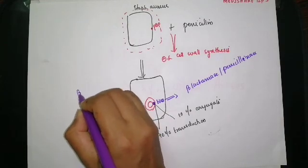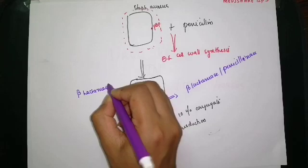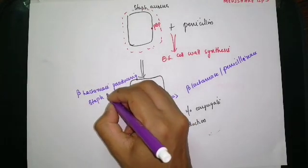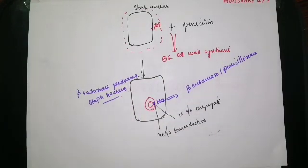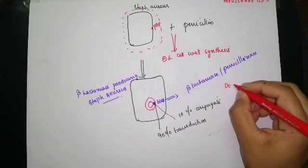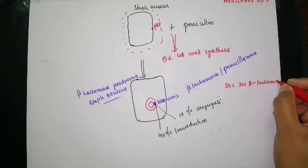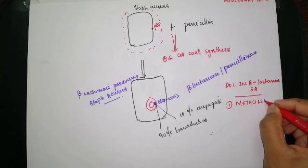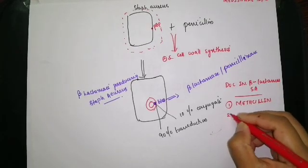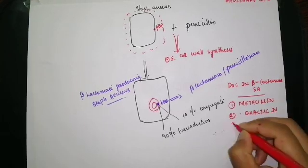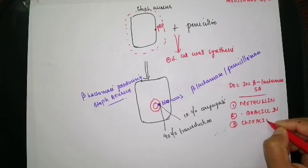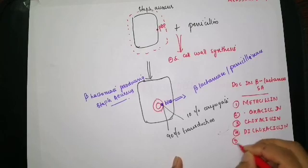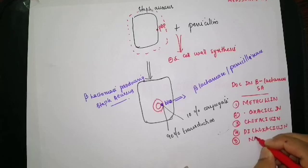These beta-lactamase producing strains are called beta-lactamase producing Staph aureus. With the use of penicillin, beta-lactamase producing Staph aureus have emerged. The drugs of choice in beta-lactamase producing strains are methicillin, oxacillin, cloxacillin, and nafcillin — these are beta-lactamase resistant drugs.